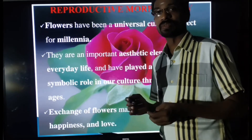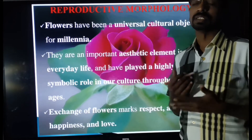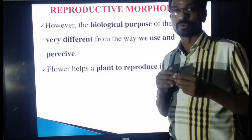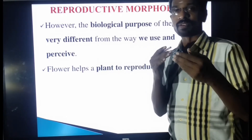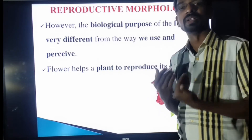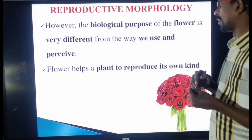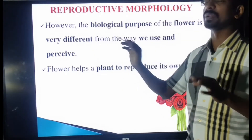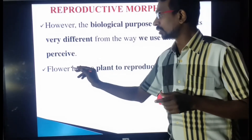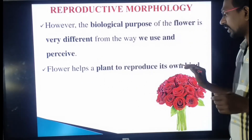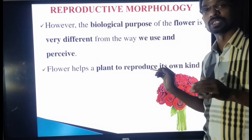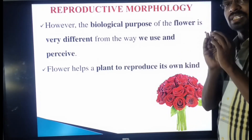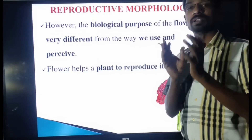This has been the case not only nowadays but for many years ago. However, in a biological point of view, the flower is different from how we use it in our day-to-day life. Biologically, the flower exists for the plant to reproduce its own kind. The appearance of the flower indicates that the particular plant is ready for reproduction.